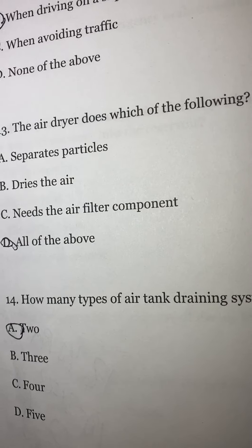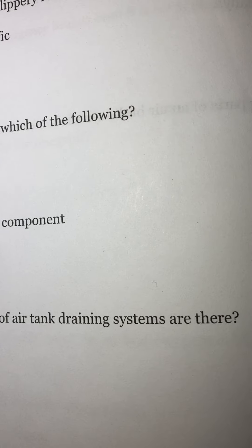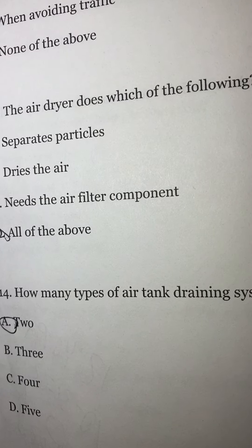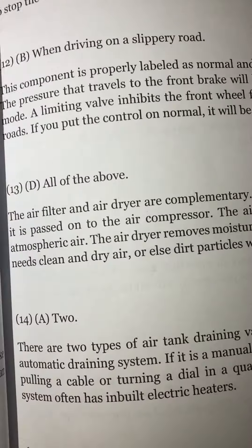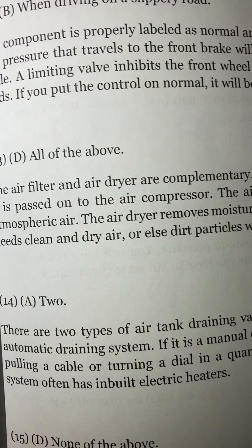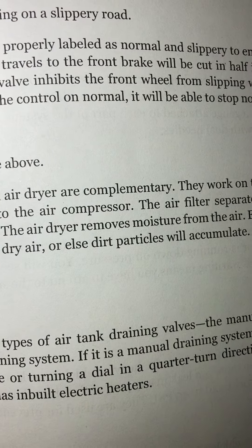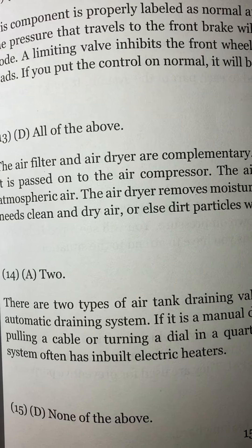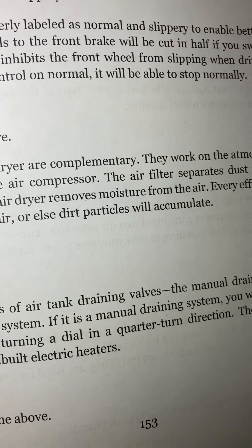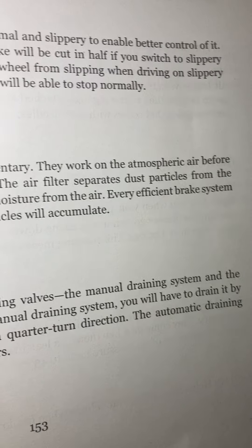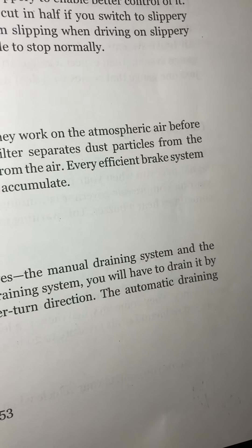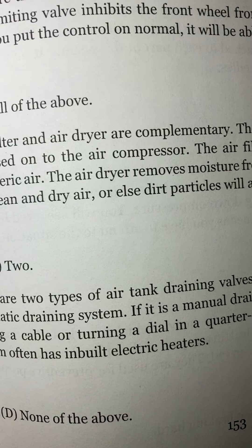Number 14: How many types of air tank draining systems are there? A) Two. B) Three. C) Four. Or D) Five. The answer is A: two. There are two types of air tank draining valves — the manual draining system and the automatic draining system. With a manual draining system, you will have to drain it by pulling a cable or turning a dial in a quarter-turn direction. The automatic draining system often has built-in electric heaters.